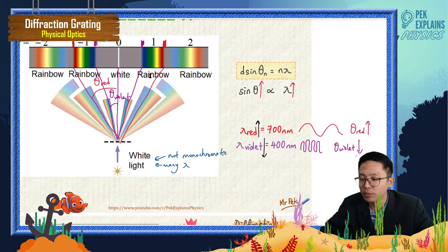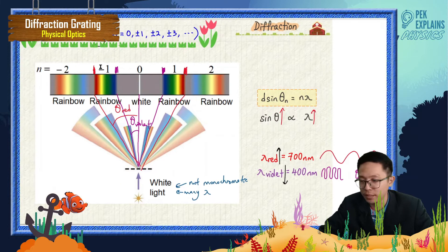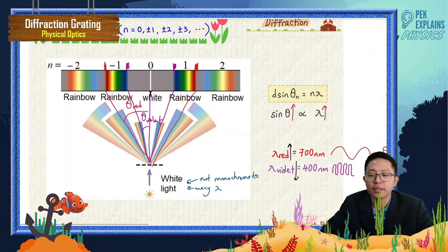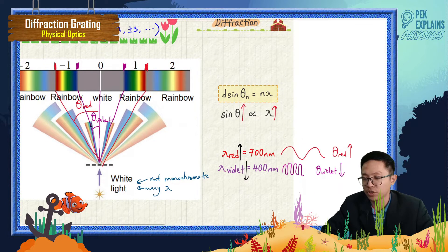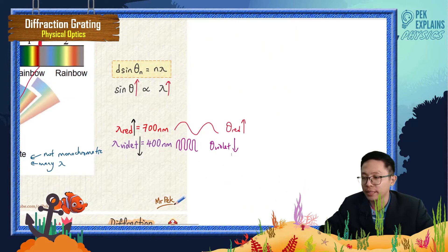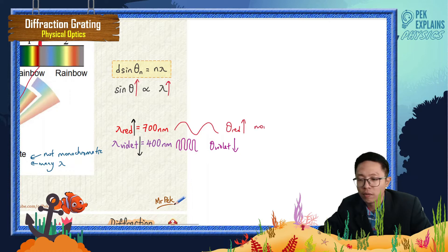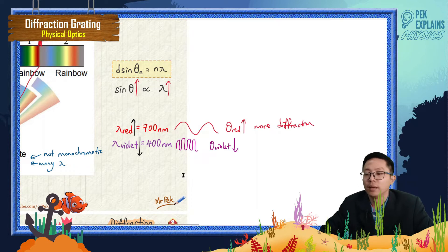So the violet, or purple color, is nearest to the central bright fringe, whereas the red is the furthest away from the central bright fringe. Because the red has a long wavelength and a big angle, while the violet has a short wavelength and a smaller angle. We can also say: the longer the wavelength, the more diffraction. The bigger the theta means more diffraction. And the shorter the wavelength, the less diffraction.